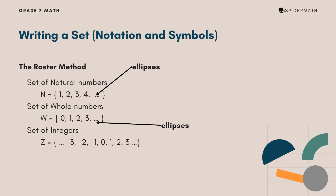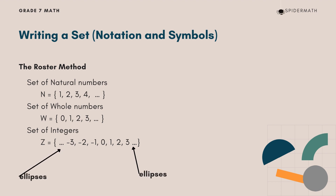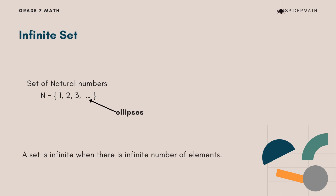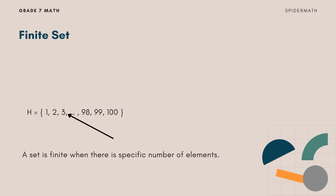Look at these examples. Set N contains all natural numbers. Set W is the set of all whole numbers. Set Z is the set of all integers. We use ellipses on both sides to show that the list goes to negative and positive infinity. When there are an infinite number of elements, we use ellipses or the three dots at the end — this is an example of an infinite set. Set N starts from 1, 2, 3 and goes forever with no limit. We can also use ellipses in the middle when the list is too long but we know the limit; we call this a finite set. Set H is the set of natural numbers from 1 to 100.